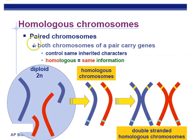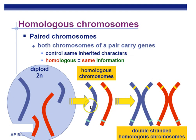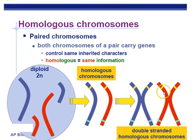Homologous chromosomes — 'homo' means the same — are the same chromosome but from different parents. You get two copies of chromosome one, two copies of chromosome two, and so on. They carry the same information, so you have two genes for every trait — kind of like a backup copy. This will be important when we discuss genetics and dominant/recessive traits. During S phase of interphase, we make another copy of those chromosomes. So each chromosome now consists of two sister chromatids. These are genetically identical — we just made a copy for mitosis or meiosis.